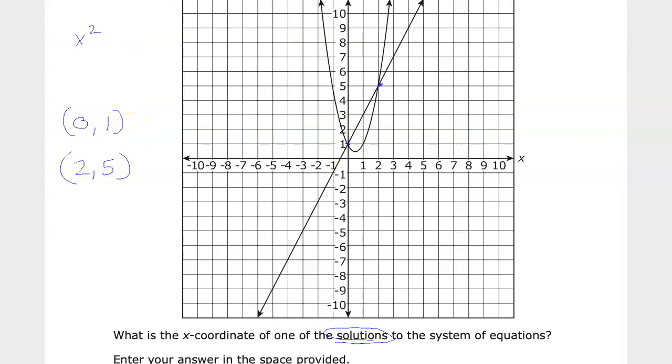So as long as it doesn't say that you have to choose one or the other—I think it does later in a different question—you can choose whatever you want. So pick either x-value that you want. And remember, (x, y), this is the coordinate here.